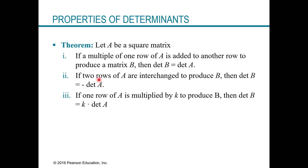Part two says if two rows of A are interchanged, producing a new matrix B, then the sign of the determinant actually swaps — the determinant of B is the negative of the determinant of A. Part three says if one row of A is multiplied by some scalar K to produce matrix B, then the determinant of B is K times the determinant of A.